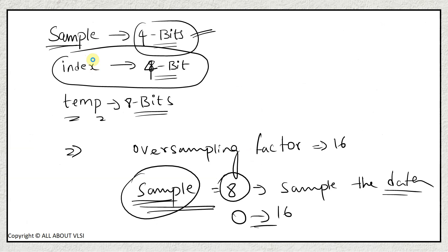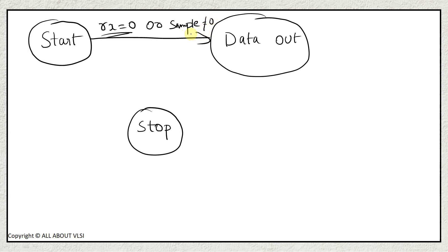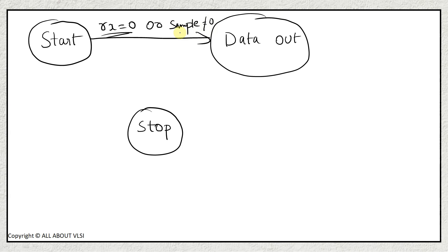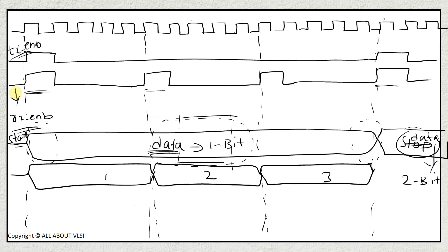From the start state we go to the data_out state whenever RX equals 0, meaning the start bit has been detected — the master wants to send data. The transition occurs when the sample signal has reached a count of 15. The RX_enable signal has an oversampling factor of 16, so we wait until sample reaches 15 before moving to data_out state.